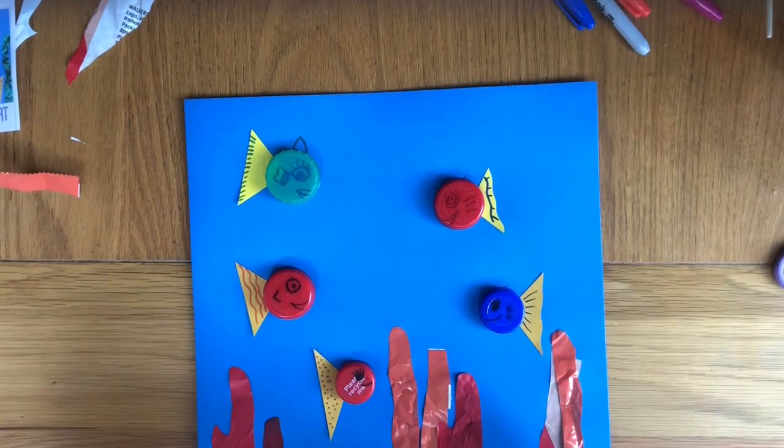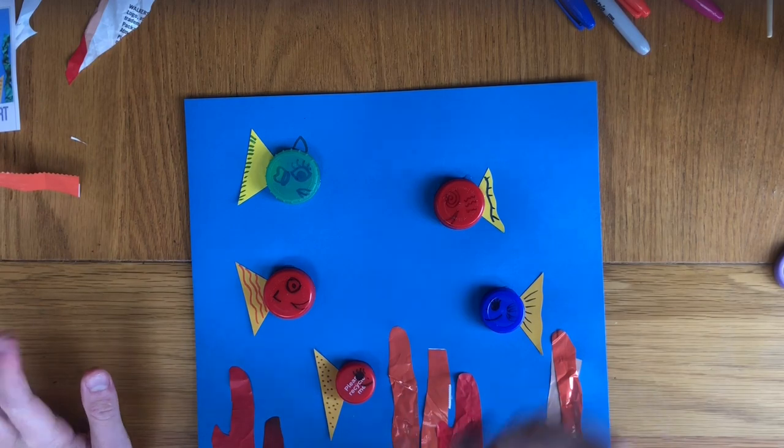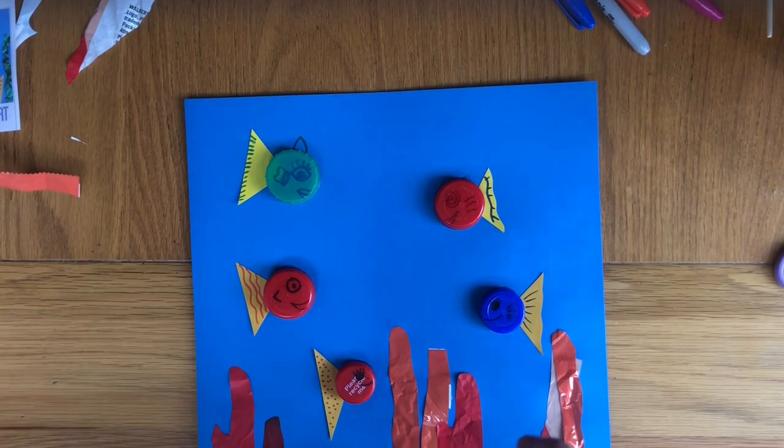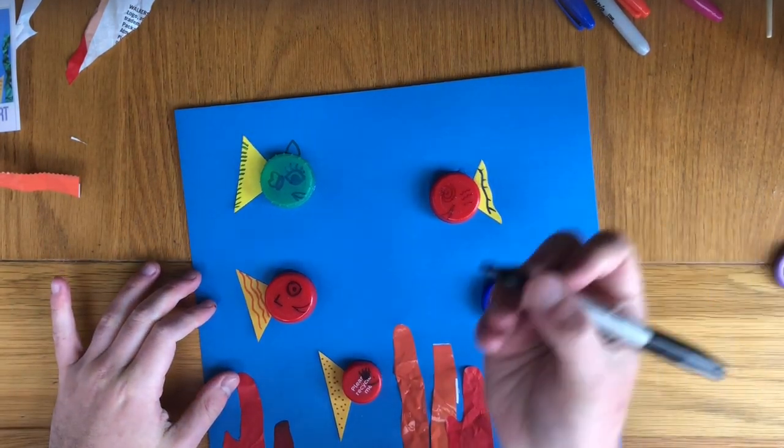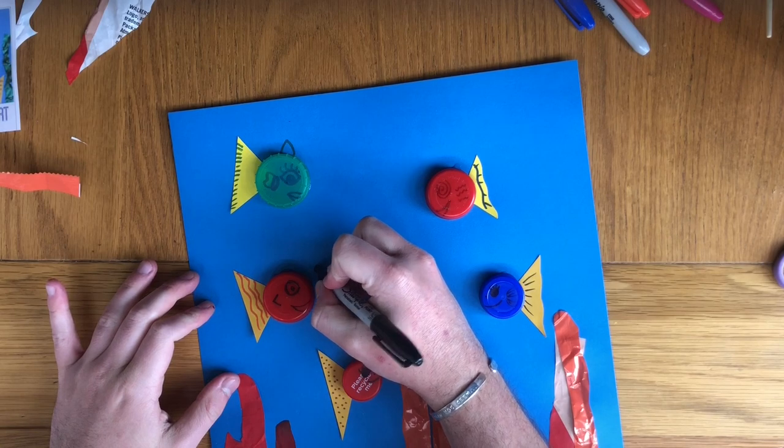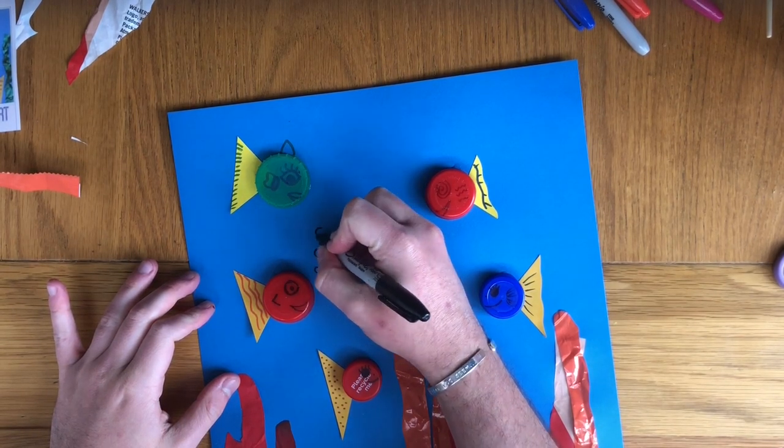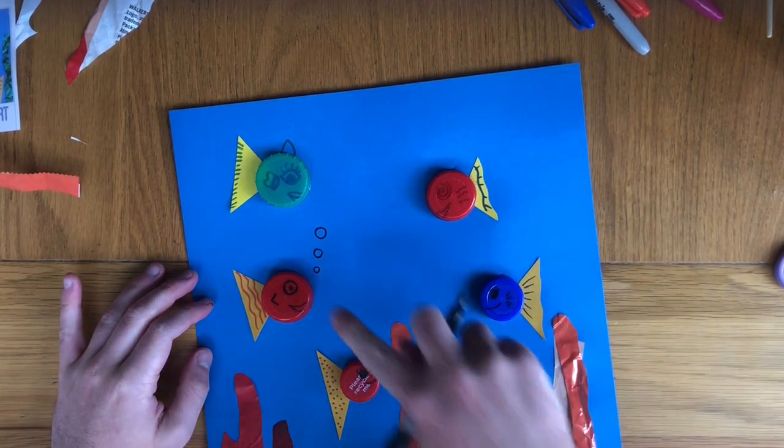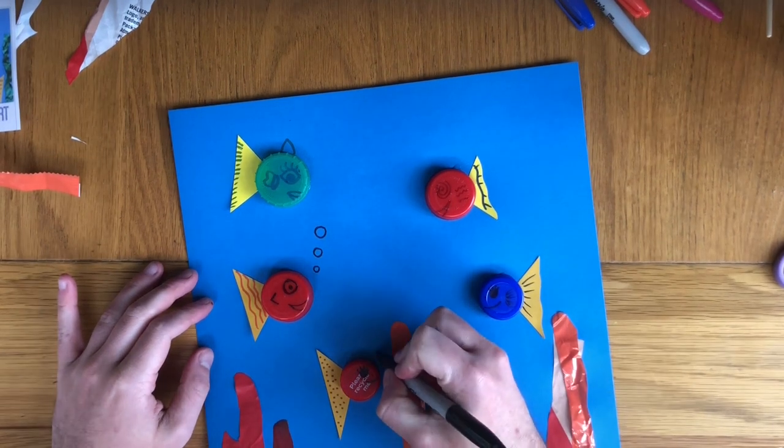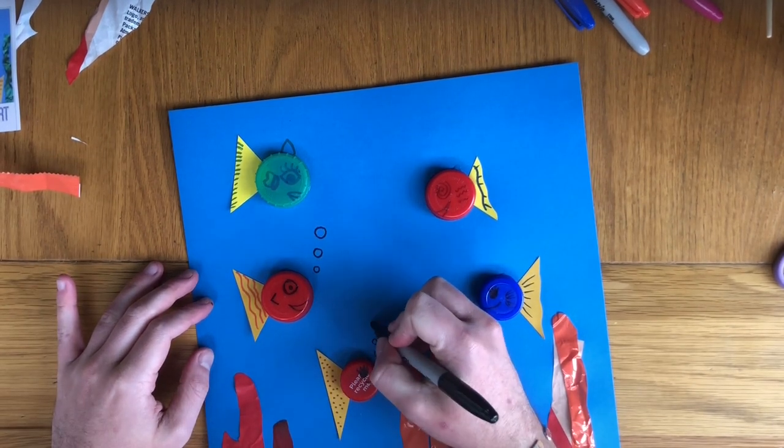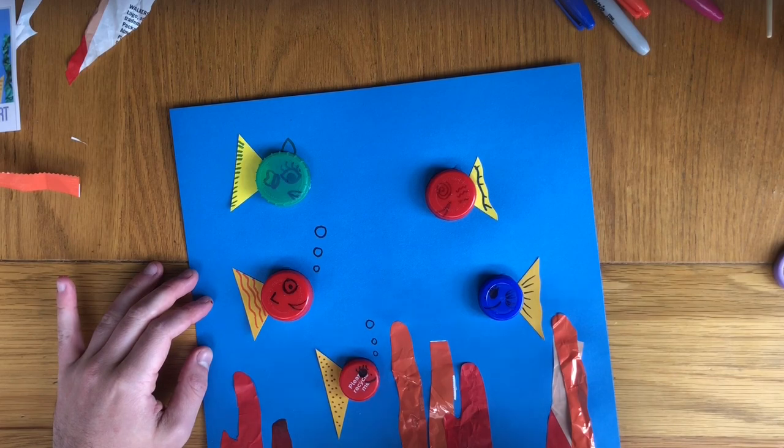Finally, if you've got some white paint, you can create some bubbles on the work. I'm going to use a marker pen to draw bubbles from small to big around the mouth area of each fish.